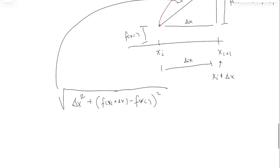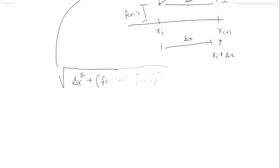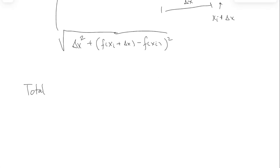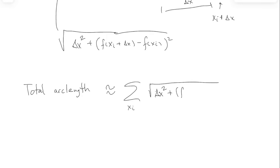The total arc length, as measured by these segments, would be the sum of all those little bitty bits — approximately equal to the sum over all xi's of the square root of delta x squared plus [f(xi + delta x) minus f(xi)] squared. Now I'm going to simplify by factoring delta x squared out of the square root sign — it becomes just delta x outside. What remains inside is 1 plus [f(xi + delta x) minus f(xi)] divided by delta x, all squared.